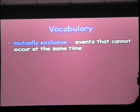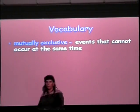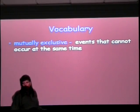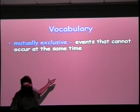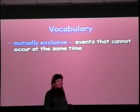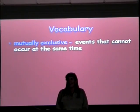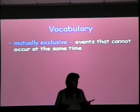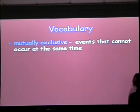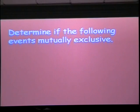So the big vocabulary in here is mutually exclusive. What do you think it means? Two things that cannot occur at the same time are mutually exclusive. That makes sense, you think? Yeah. The words actually make sense. So we're going to look at a few problems. We'll tell you if each pair of events is mutually exclusive.